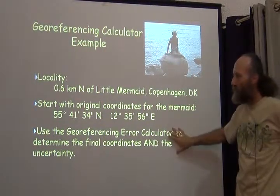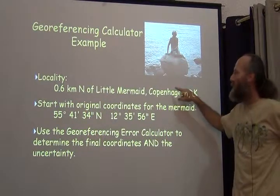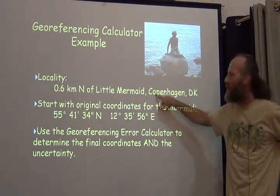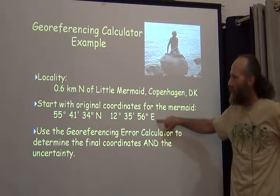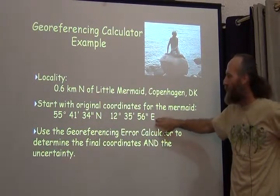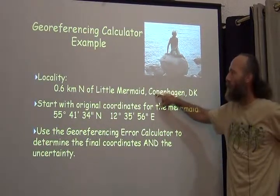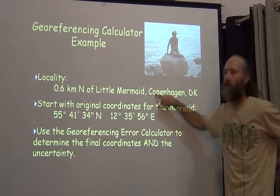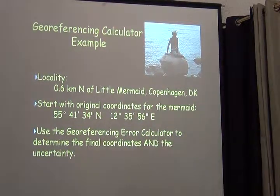And the process, what we wanted to be able to do is use the georeferencing calculator to determine where this location is given we know this location. So that's where the Little Mermaid is, and the idea was to find out where 0.6 kilometers north of her would be. So a basic georeferencing exercise.